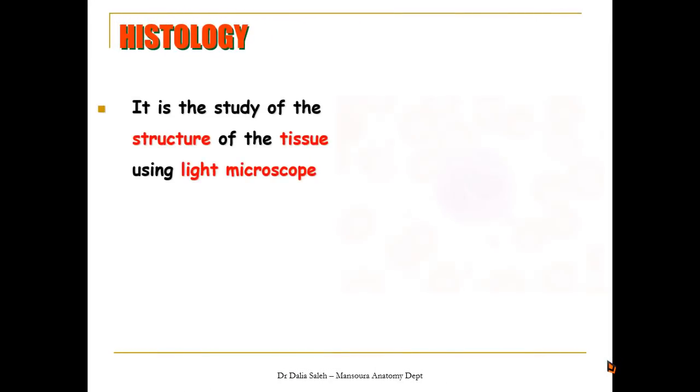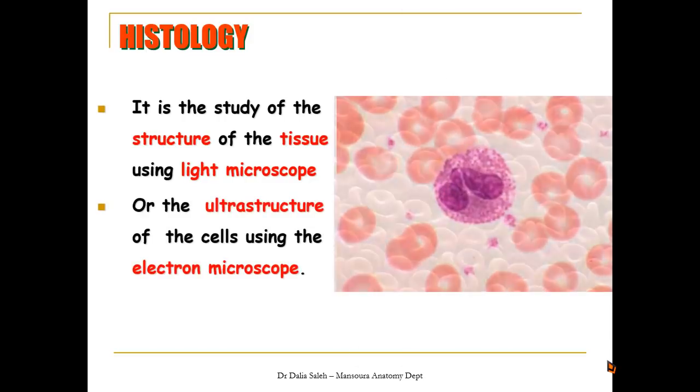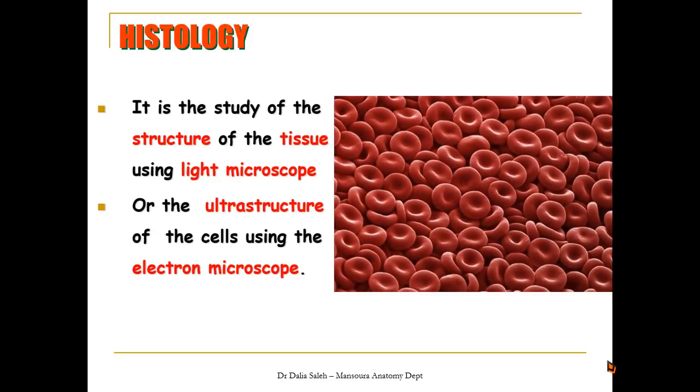By definition, histology is the study of the structure of the tissue using an aid like the light microscope. We can see here in this blood film, these are the red blood cells, and in the middle, you can see a white blood cell. But if we want more details, we can use another aid like the electron microscope, either the transmission or the scanning electron microscope, to see more details of the cell.